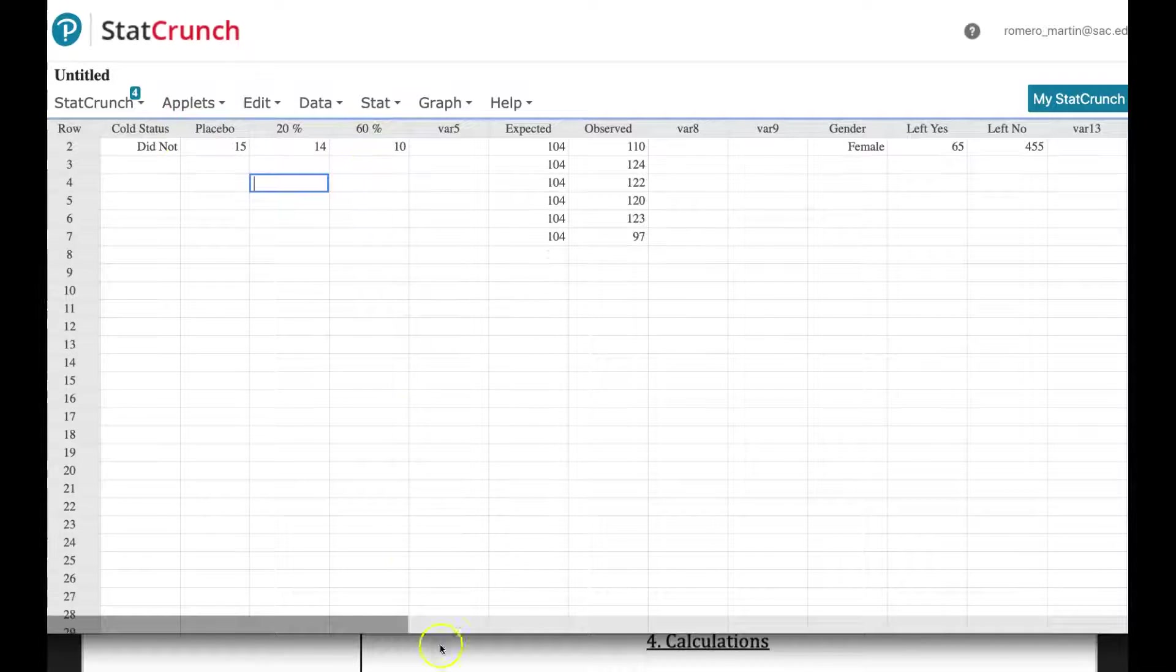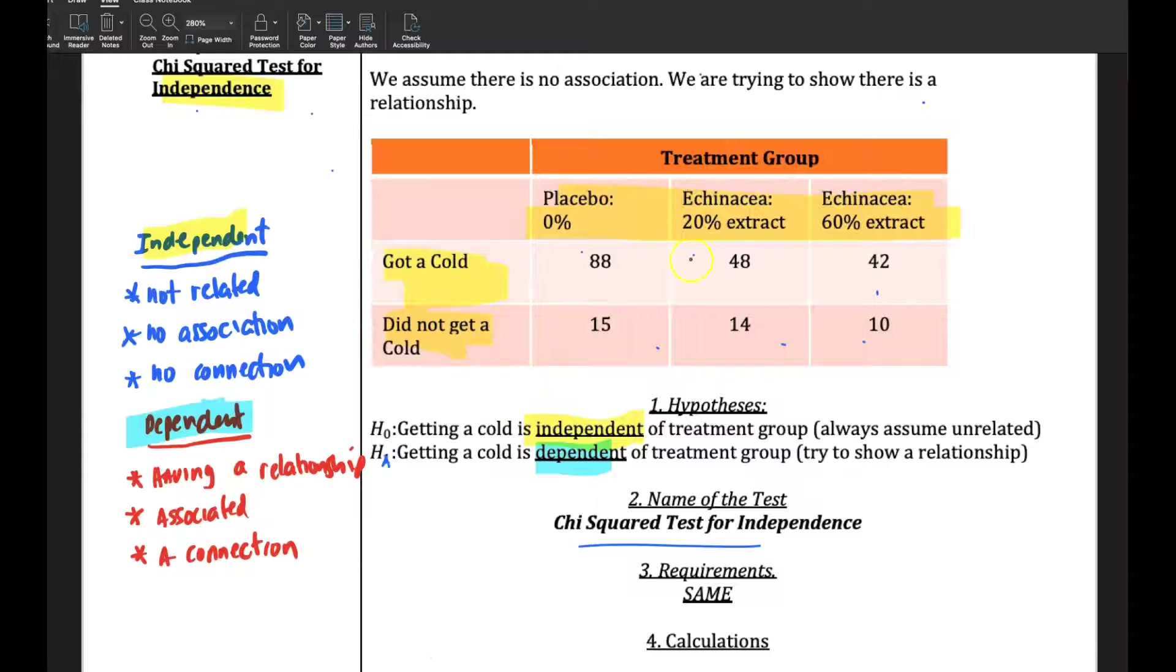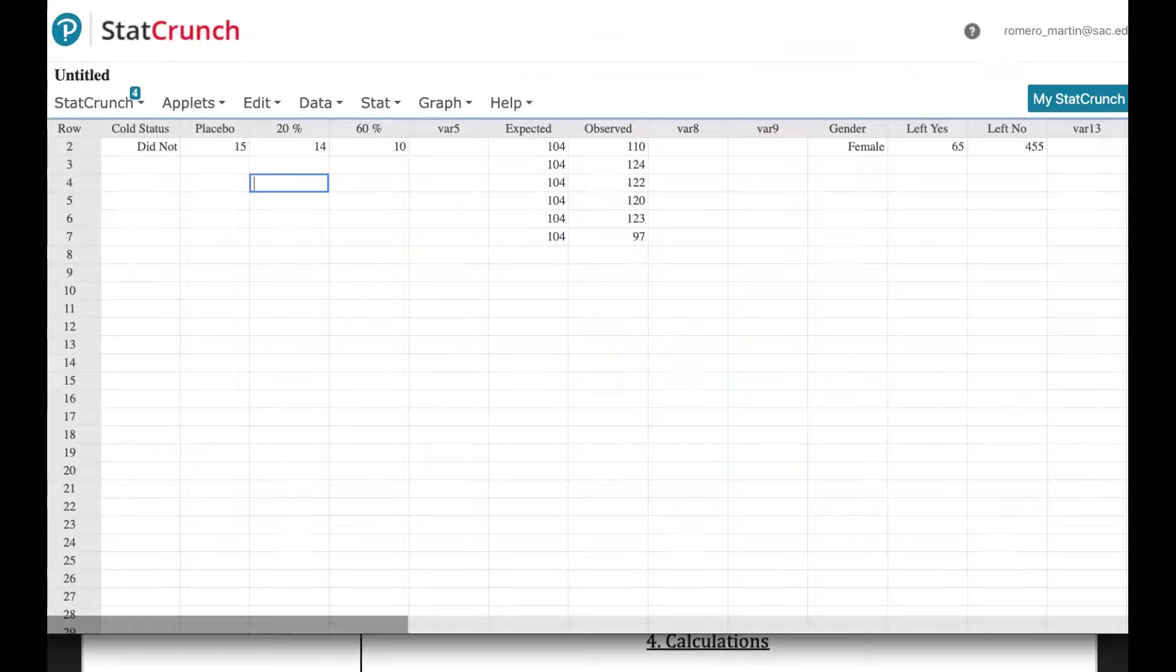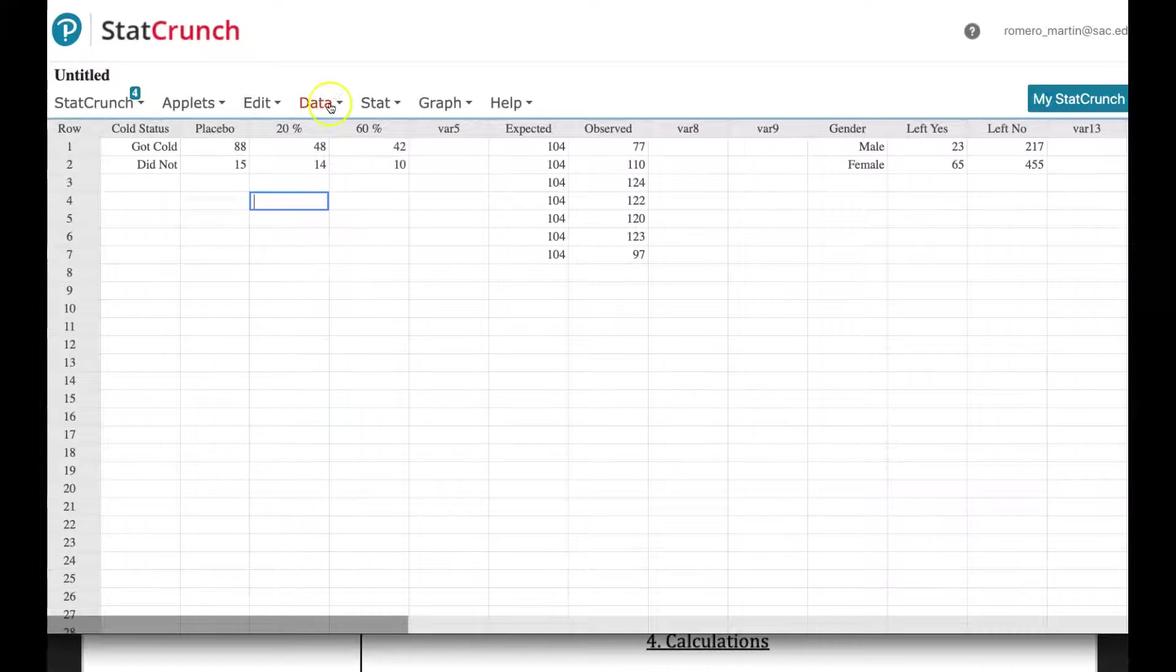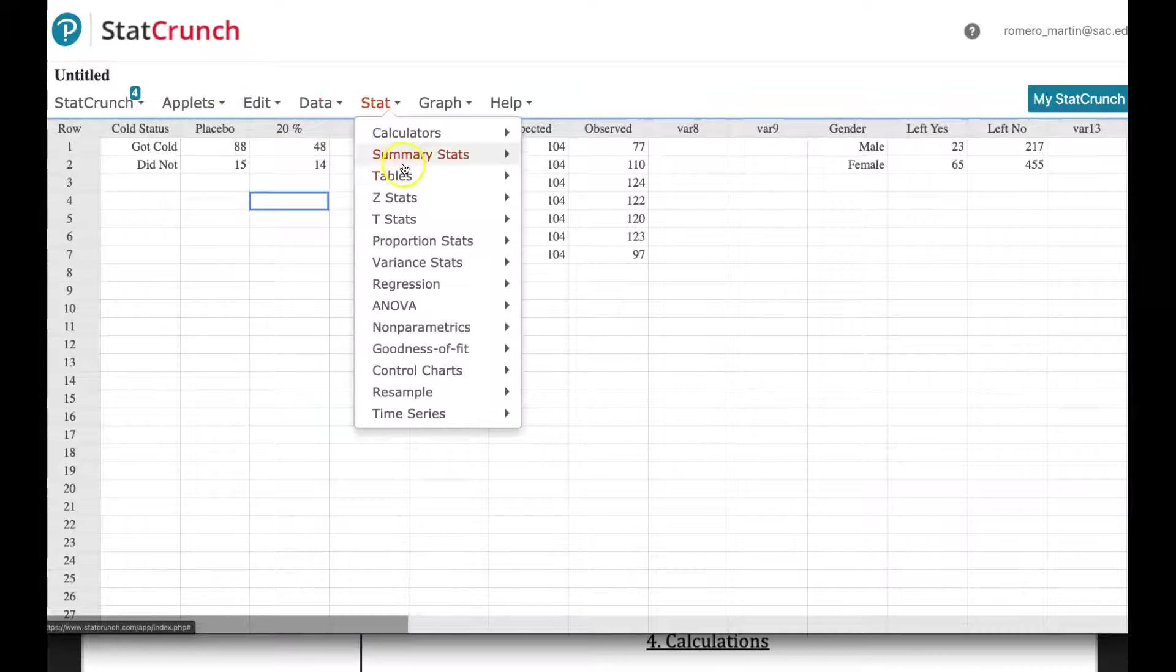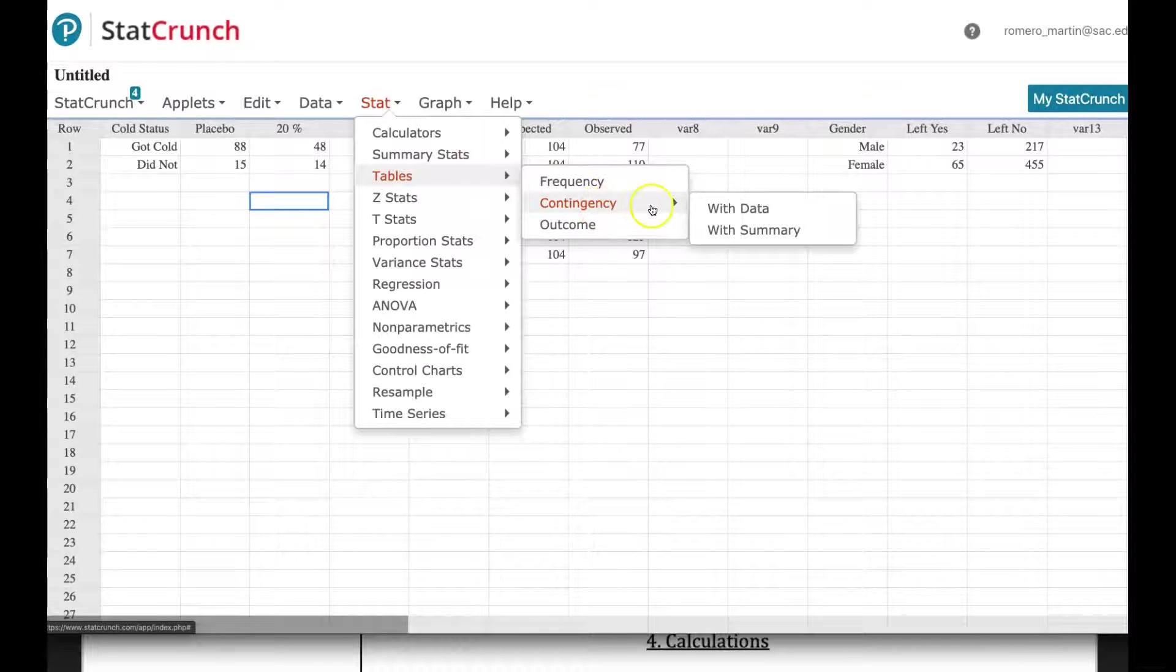So you created the table, you recreated this table here into StatCrunch, and then here we're going to go Stat, Tables, and then you go to Contingency Table, and we have the data summarized.